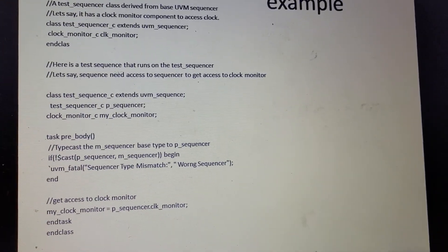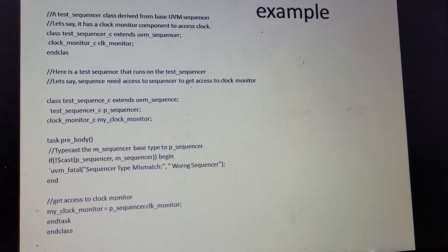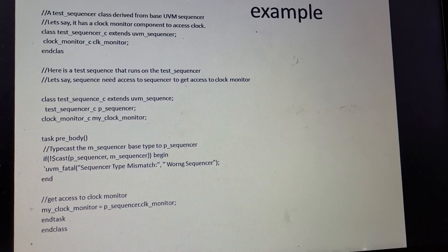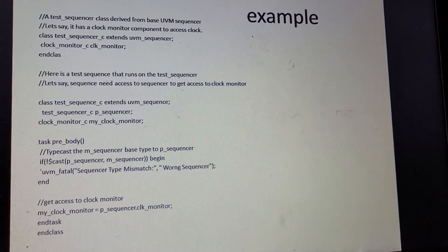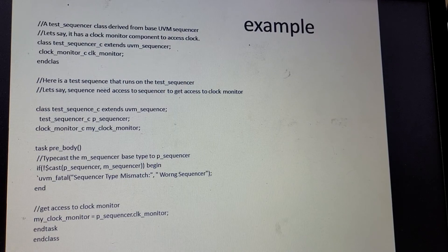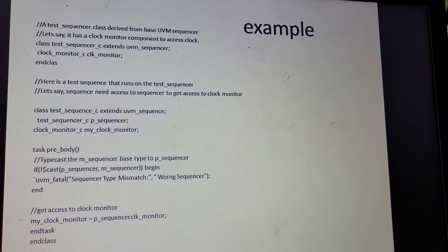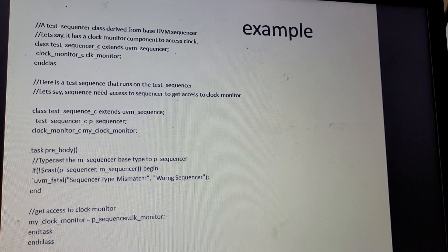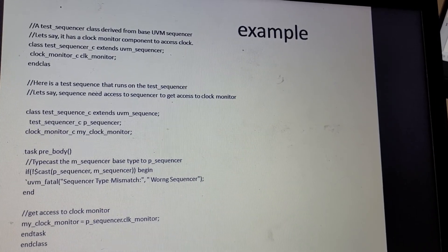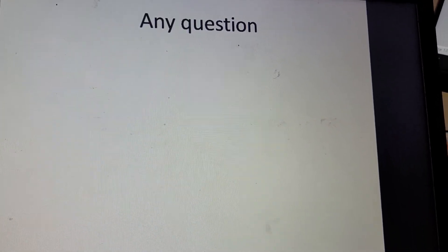For example, suppose you have a sequencer with a clock monitor handle. In the test, if you want to access that clock monitor, you do a dollar-cast of p_sequencer with m_sequencer. Then in the testbench you can write: my_clock_monitor = p_sequencer.clock_monitor. So the clock monitor is accessible through p_sequencer via the handle my_clock_monitor.